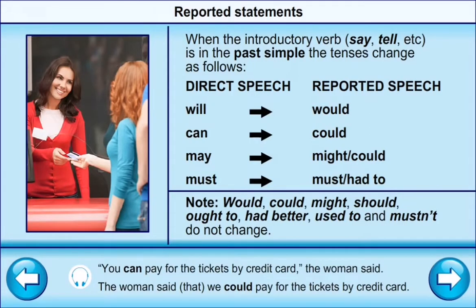When the introductory verb (say, tell, etc.) is in the past simple, the tenses change as follows — modal verbs shift: will → would, can → could, may → might, could → could, must → must or had to. For example: 'You can pay for the tickets by credit card.' The woman said → The woman said that we could pay for the tickets by credit card.